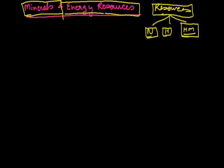First of all we will do minerals. Minerals are naturally occurring substances which have a definite chemical composition. Rocks are combinations of homogeneous substances called minerals. It depends upon the physical and chemical conditions under which the minerals are formed in these rocks. We need to know the geologist's definition of minerals.